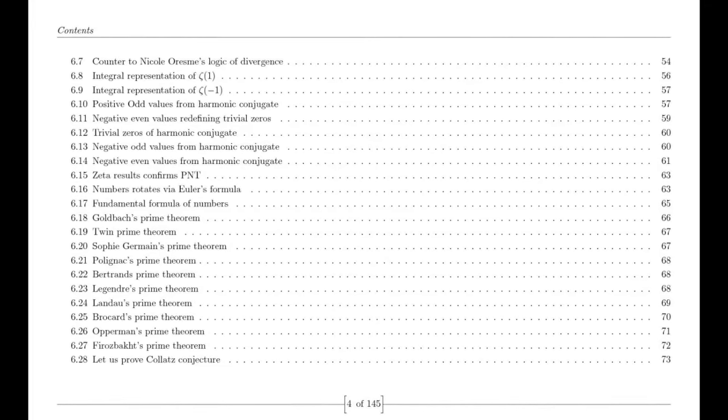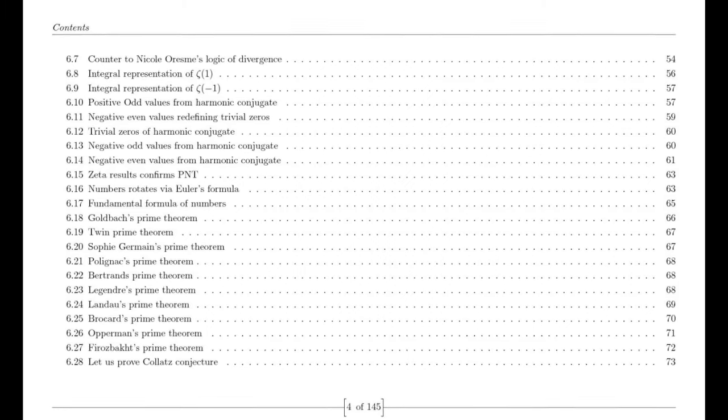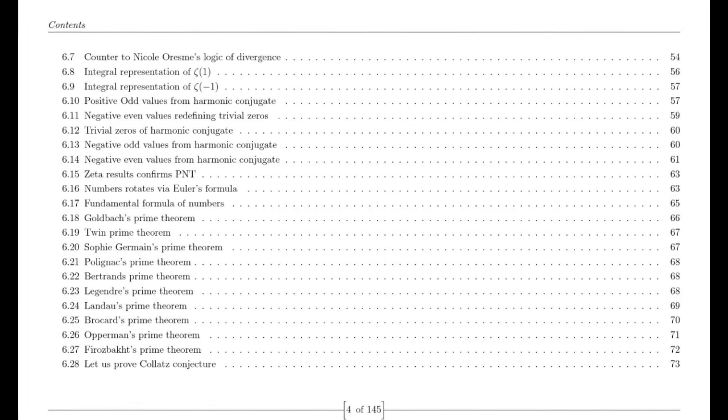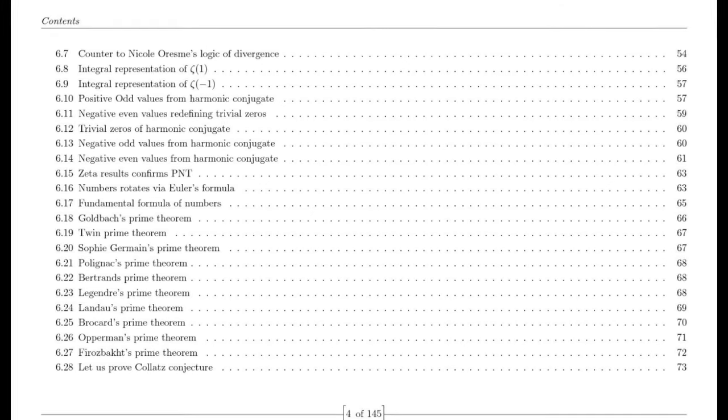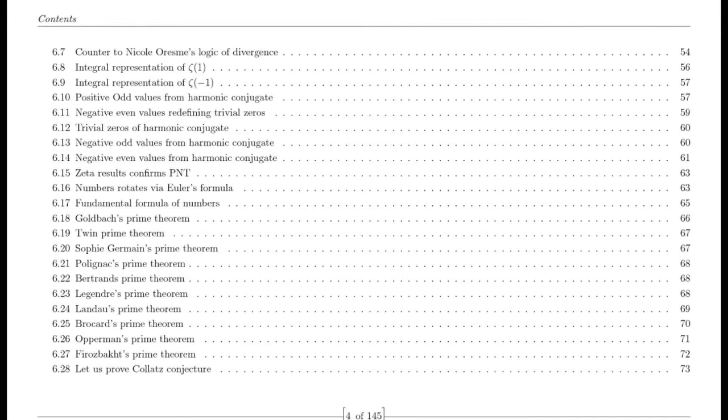The Riemann zeta function is a complex valued function defined for complex numbers s with a real part greater than 1. It is computed by summing the reciprocals of all positive integers raised to the power of minus s, starting from 1 and continuing infinitely. In other words, zeta(s) is expressed as the sum of 1^(-s) + 2^(-s) + 3^(-s) and so on, extending to infinity.